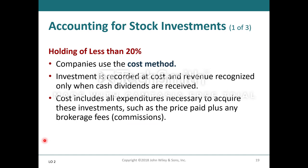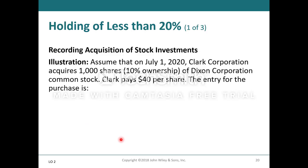For holdings of less than 20%, companies use the cost method. The investment is recorded at cost and revenue is recognized only when cash dividends are received. Costs include all expenditures necessary to acquire these investments, such as the price paid plus any broker's fee, commission, etc.